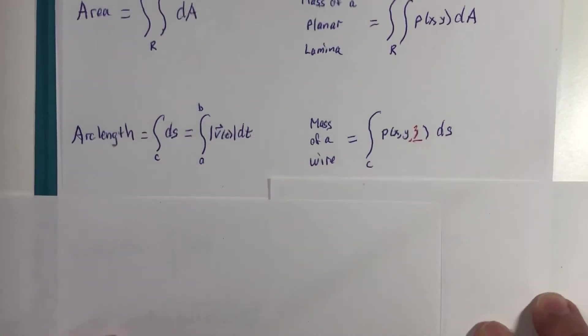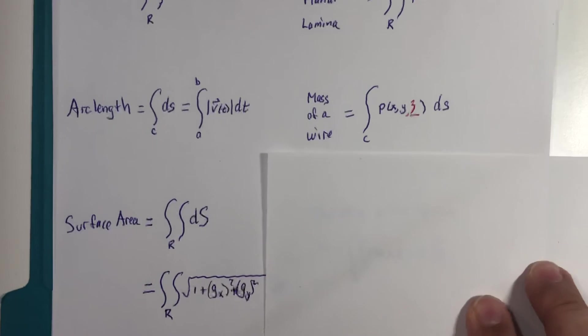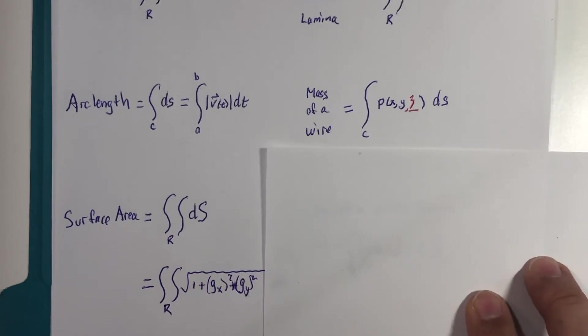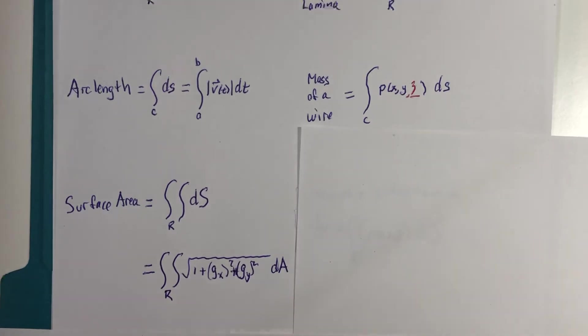So surface area we met, although I don't know that we use this capital S notation. What we had, let me just scroll here a little bit, was this was our formula for surface area. And there's a region, and then this g of xy is our surface. Let's change colors here. All right, so our surface was z equals g of xy.